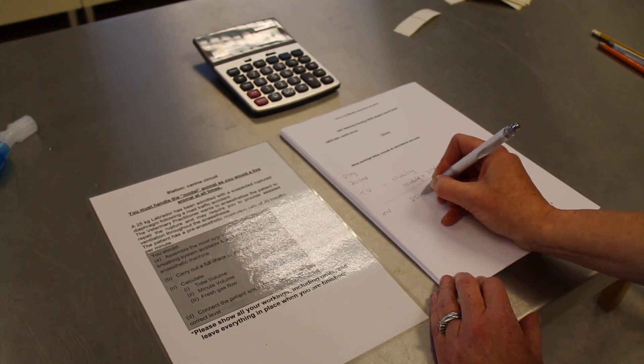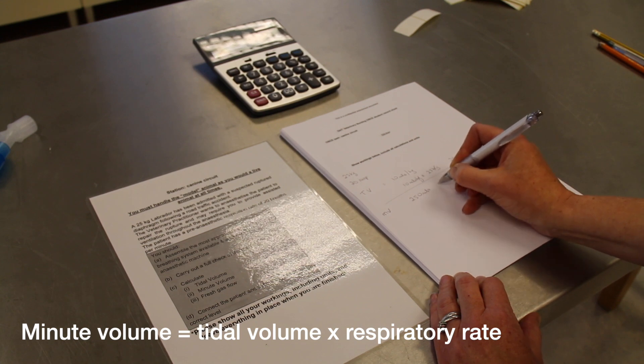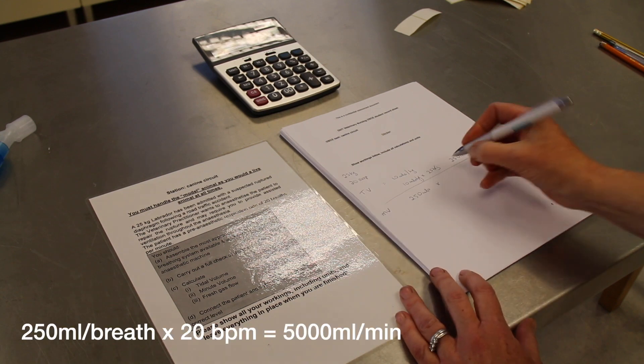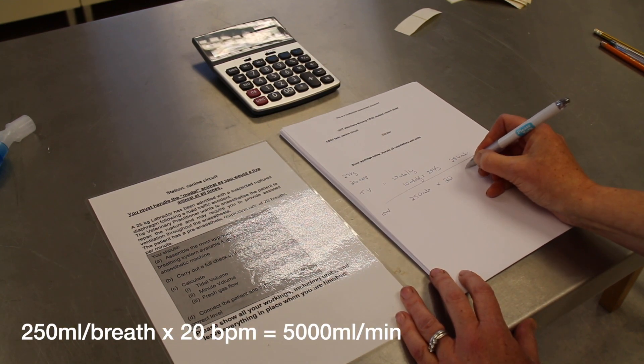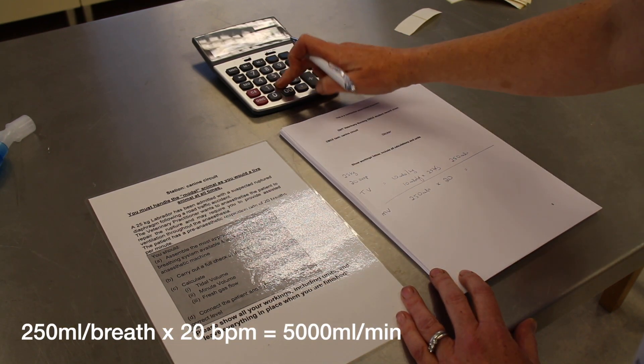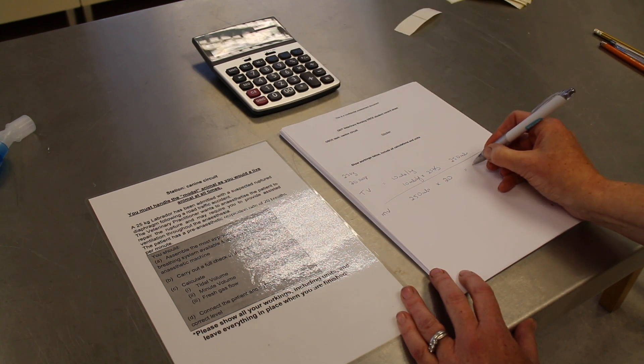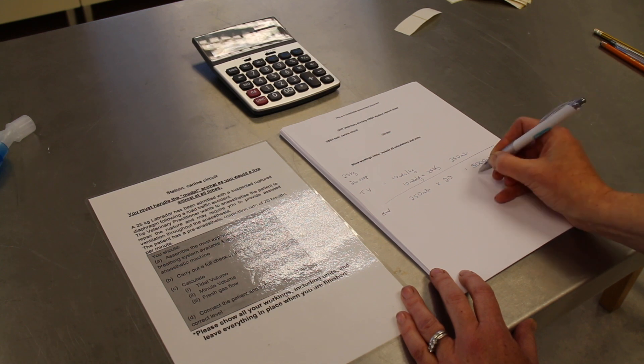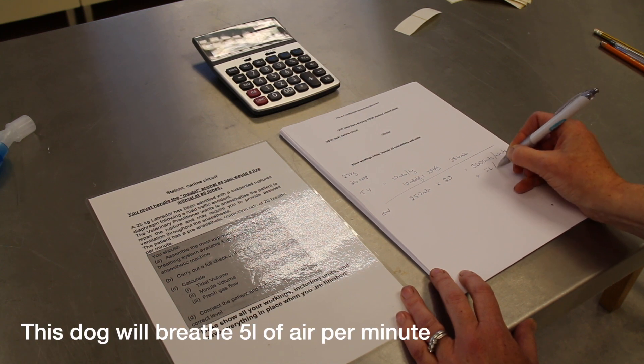Next, we calculate minute volume by multiplying our tidal volume answer, 250 mL, by the number of times the animal breathes per minute - 20 breaths. That gives us 5,000 mL per minute, or 5 liters per minute.